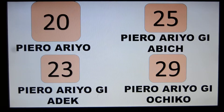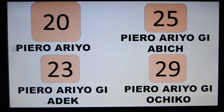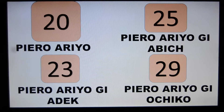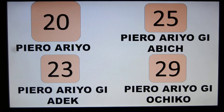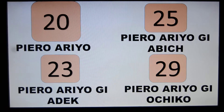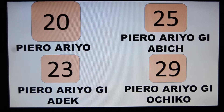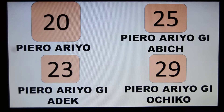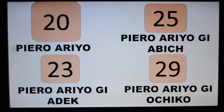Two tenths is called PIERO, so PIERO ARIO is 20. PIERO ARIO GI ACHIEL — you see, it is two tenths and a one. PIERO ARIO GI ABICH gives you 25. PIERO ARIO GI ADEK is 23 — two tenths and a three. PIERO ARIO GI OCHIKO is two tenths and a nine, and that concept moves on to the 30s.